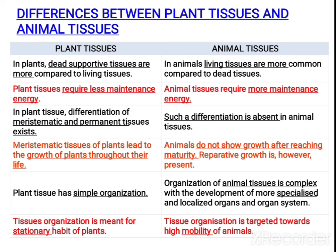So children, you have studied the differences between plant tissues and animal tissues. It can be asked in two-mark and three-mark questions. Today we are concluding up to this. Practice what we have studied and we will meet in the next class. Thank you.